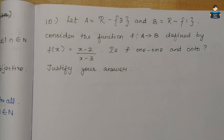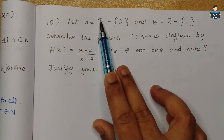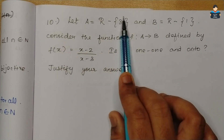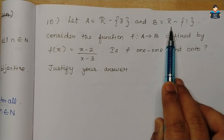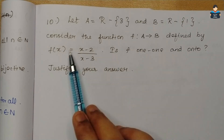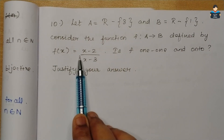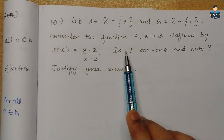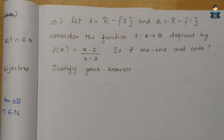Hello everyone, welcome to our channel. In this video we will cover standard NCERT Class 12 Chapter 1, Relations and Functions, Exercise 1.2, Question 10. Let A be the set of real numbers except 3, and B be the set of real numbers except 1. Consider the function f: A → B defined by f(x) = (x-2)/(x-3). Is f one-to-one and onto? Justify your answer.